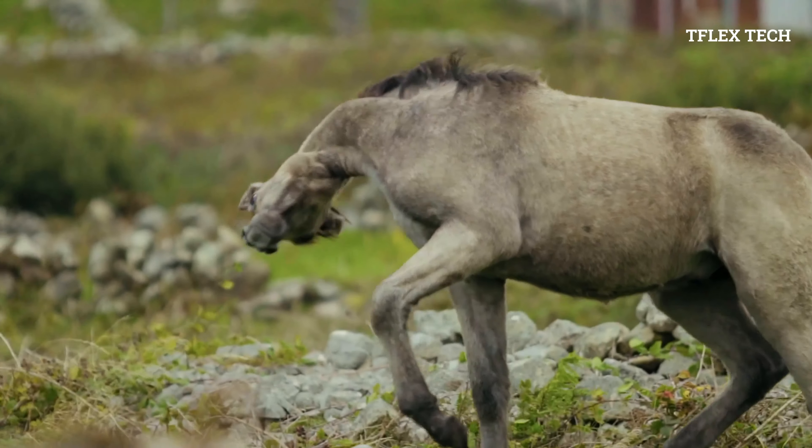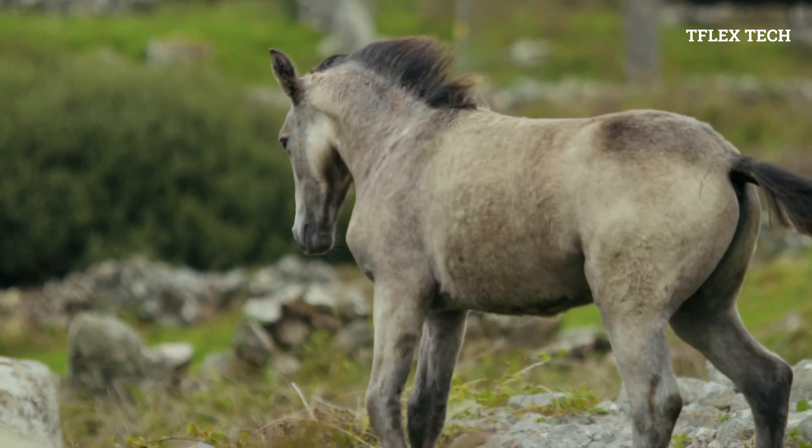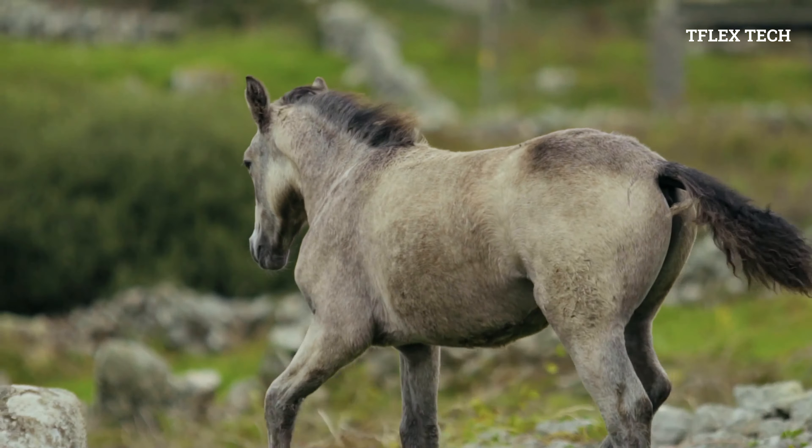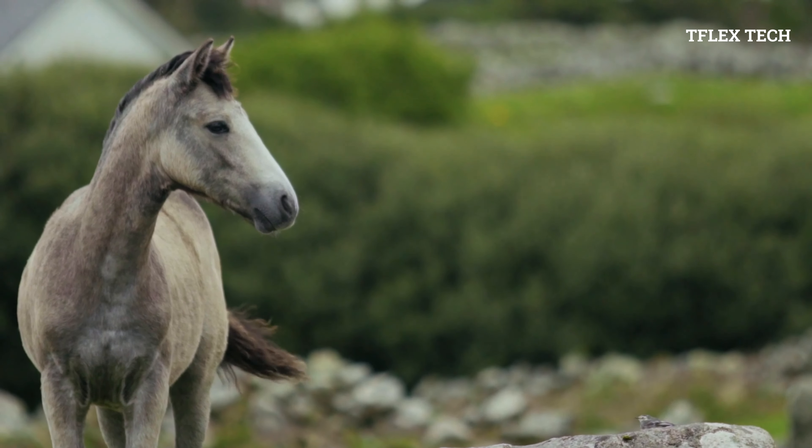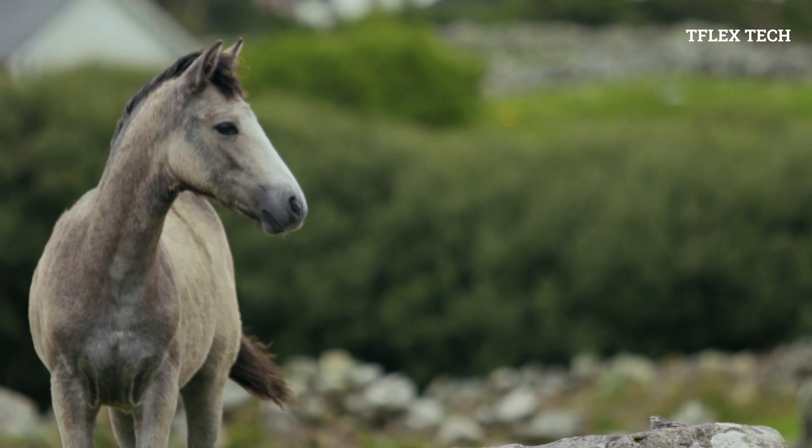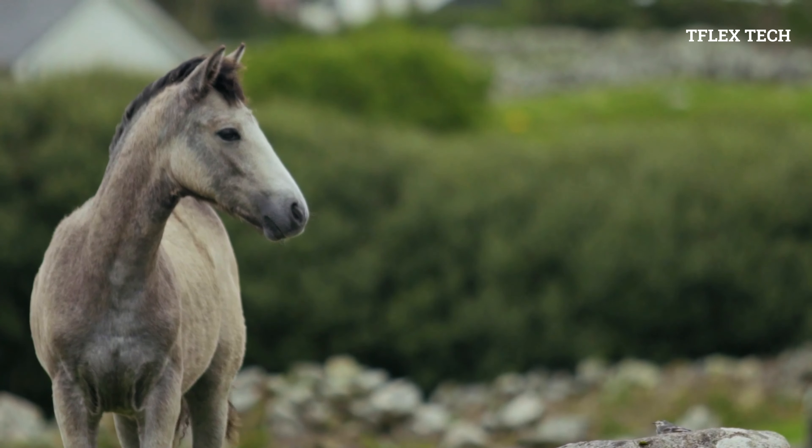When young animals walk on a perfectly flat surface, these neural networks are sufficient to direct movement signals from the spinal cord, but a small bump in the ground can alter the gait. This is when reflexes intervene and regulate movement patterns to prevent the animal from falling.